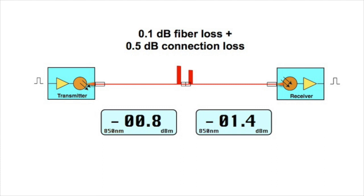In this segment, our signal not only suffered loss from the length of fiber, but it also passed through a connection, a mated pair of connectors with a loss of a half a dB. So the total amount of signal loss in this segment is a tenth of a dB from fiber loss and a half a dB for a connector loss for a total of six tenths of a dB.